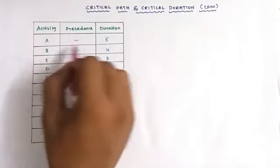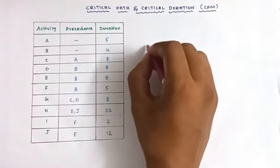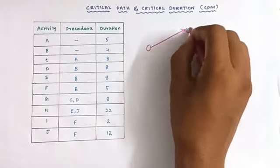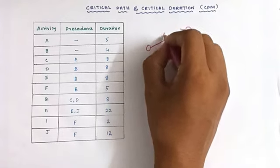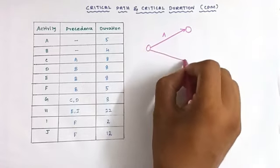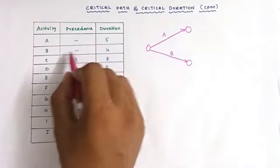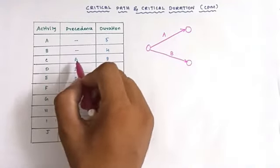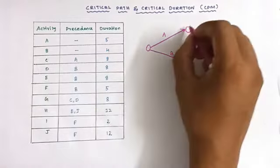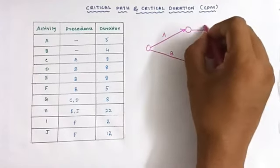For activities A and B there is no preceded relationship, so we can draw A and B first. A activity has no preceded activity. Next, we draw C activity — after completion of A activity, C will start. So after A, C activity will start.